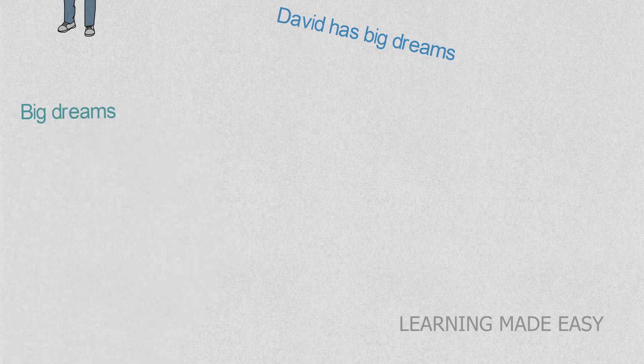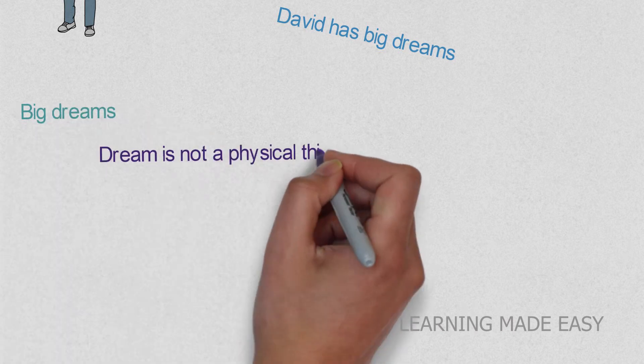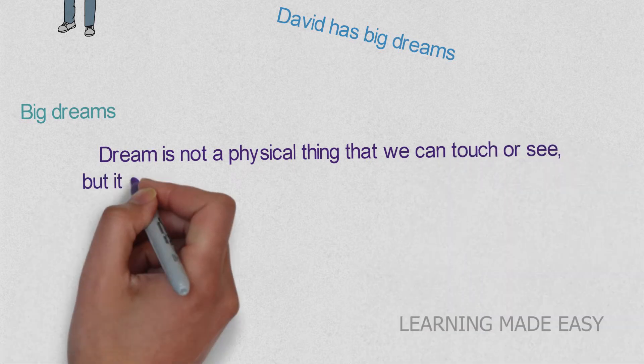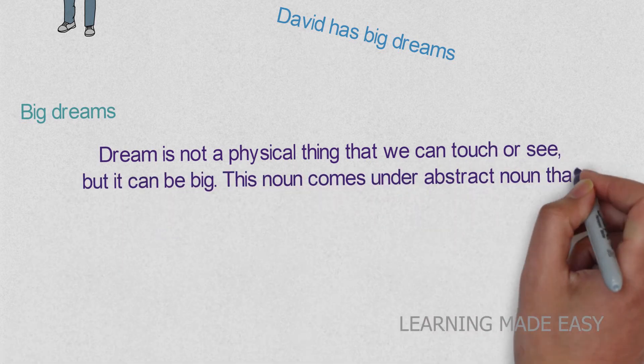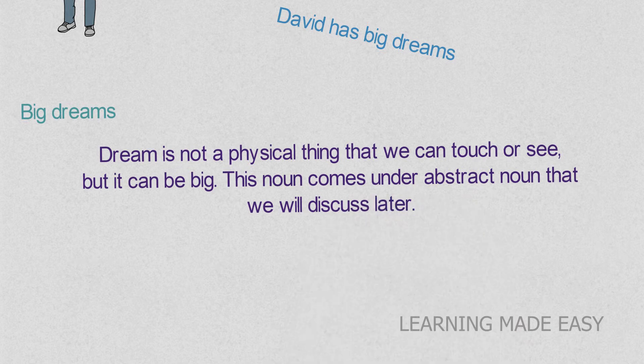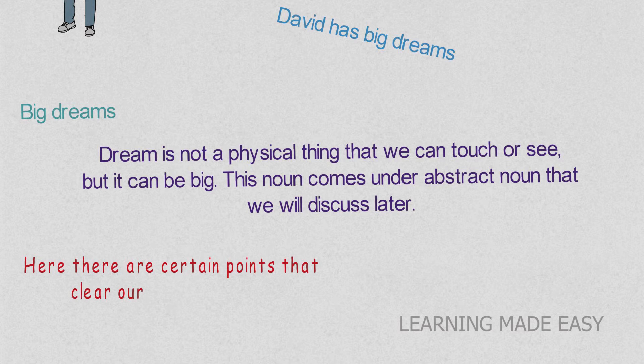Then the confused part is big dreams. You'll be thinking, how can dreams be a noun? When we dream, we dream big. We see things in that. Dreams can be big. Dream is not a physical thing that we can touch or see, but it can be big. This noun comes under abstract noun that we will discuss later.